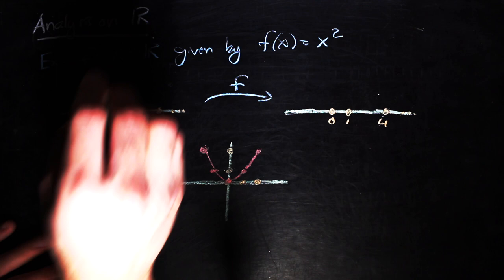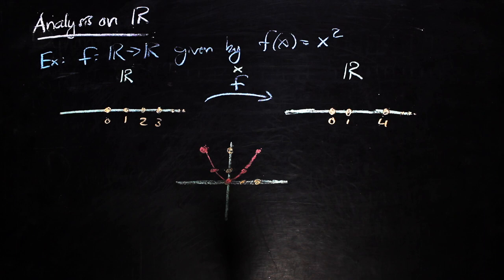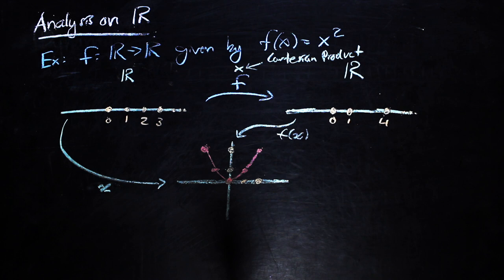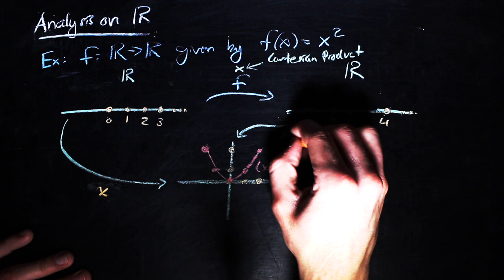but there is a reason I have avoided talking about graphs of functions. For functions on the real line, graphs are incredibly helpful as a visualization, and they work because you can visualize the Cartesian product of two real lines. That is, we can cross the domain line and the image line and generate a plane where we can easily mark down the ordered pairs, x comma f of x. Or, in other words, we can mark down which point in the domain line goes to which point in the image line.